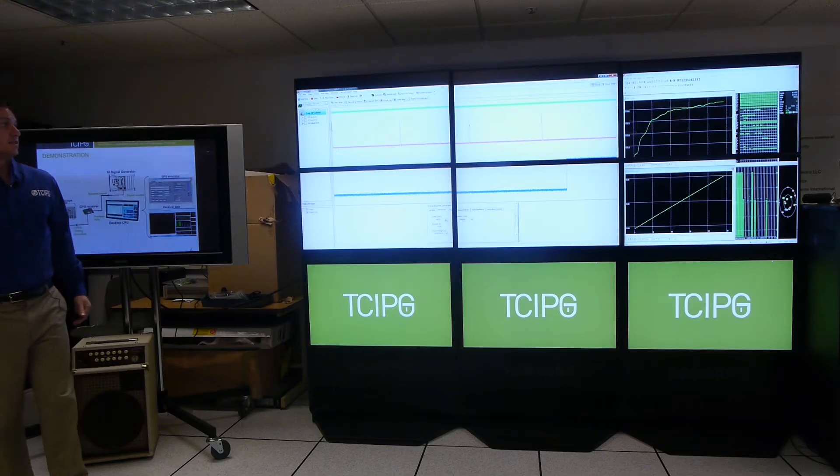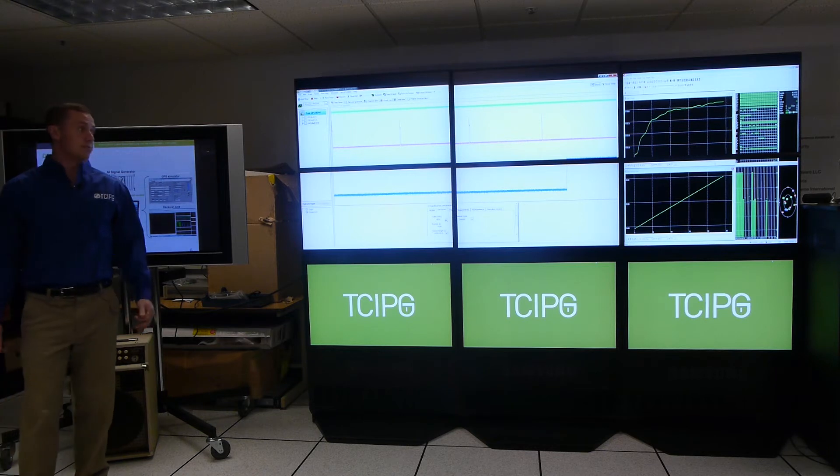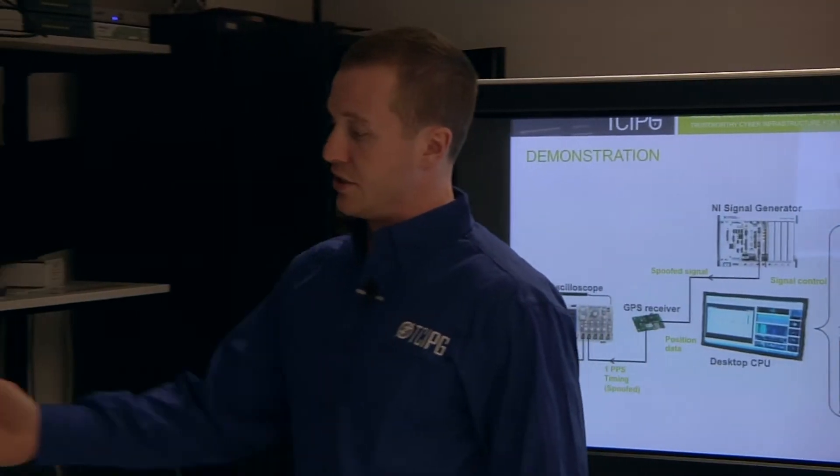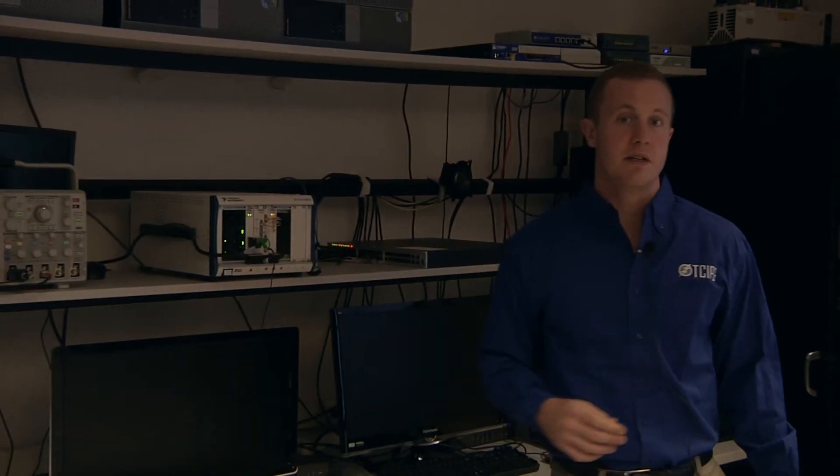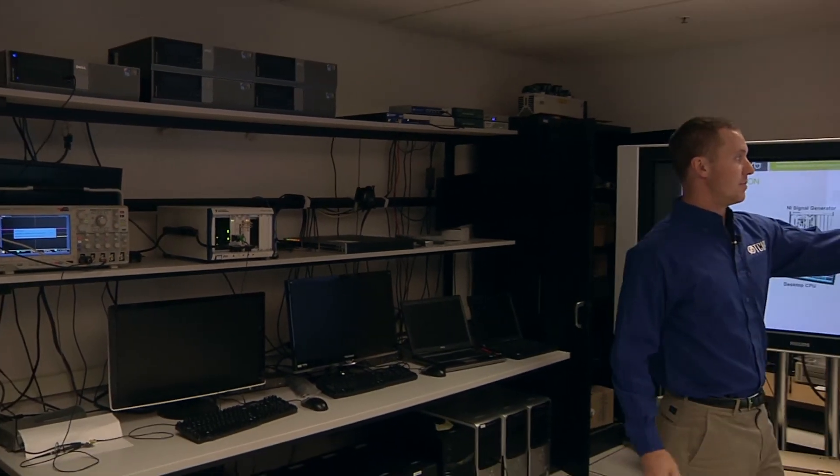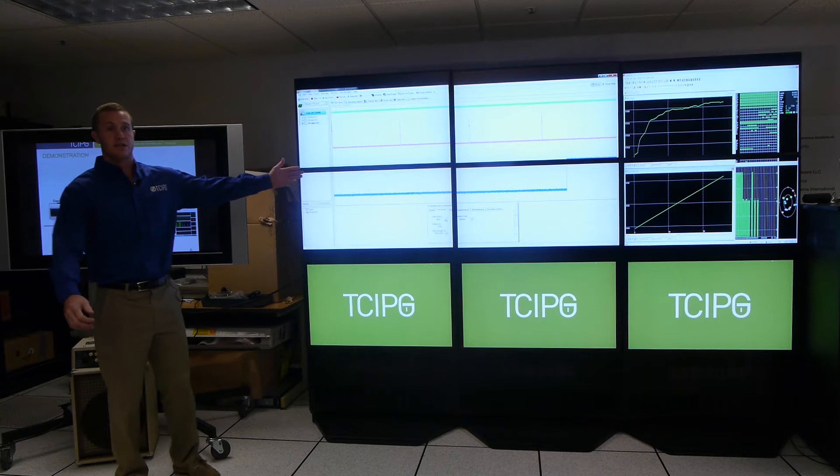On the top plot on the screen you can see the receiver position and the bottom plot shows the receiver clock offset. In addition, this receiver is outputting a pulse per second timing signal. That signal is being fed into our oscilloscope here and the output of the oscilloscope is seen on the four plots you see here on our screen.